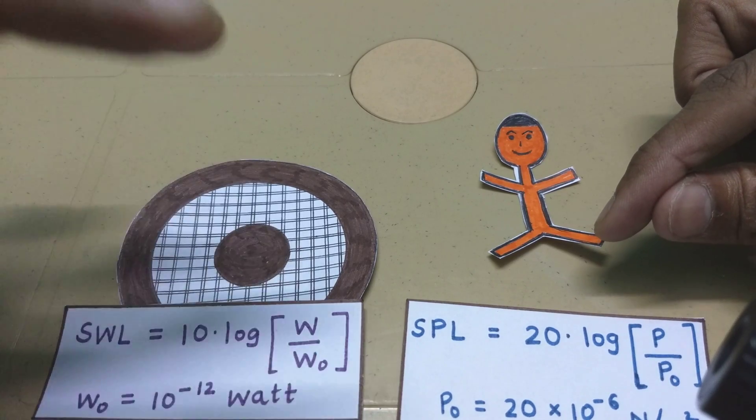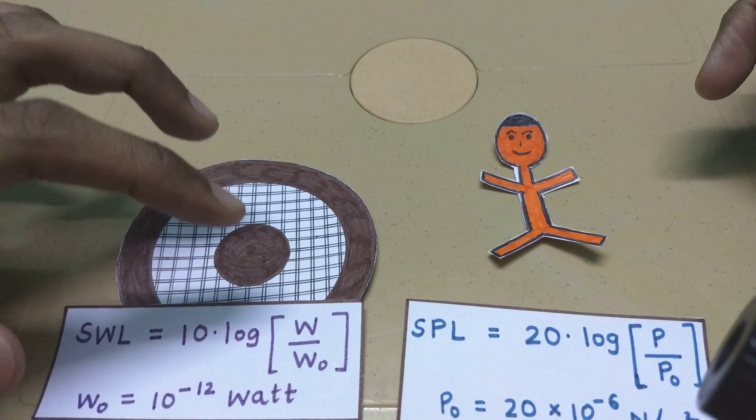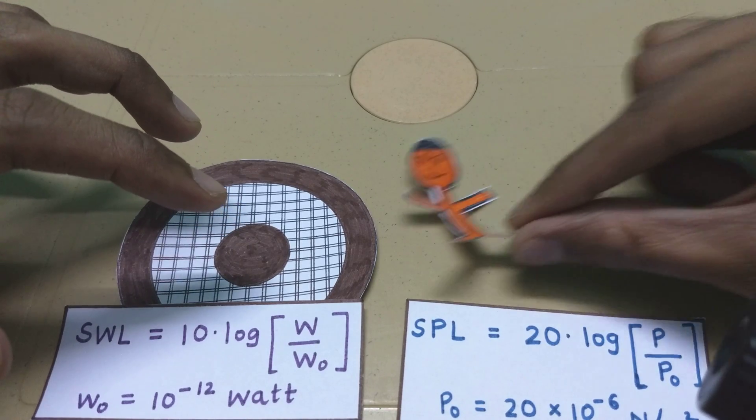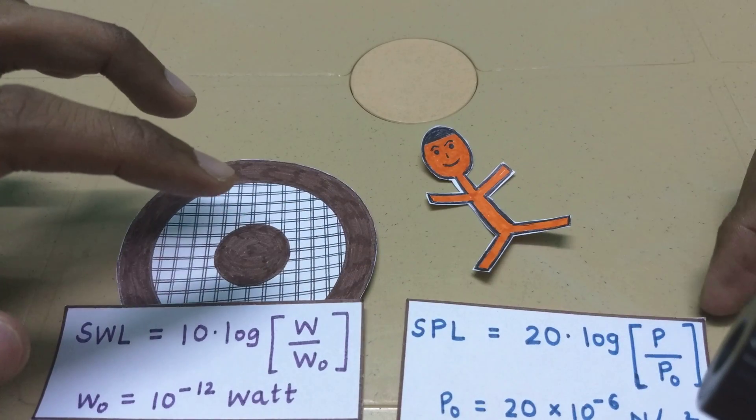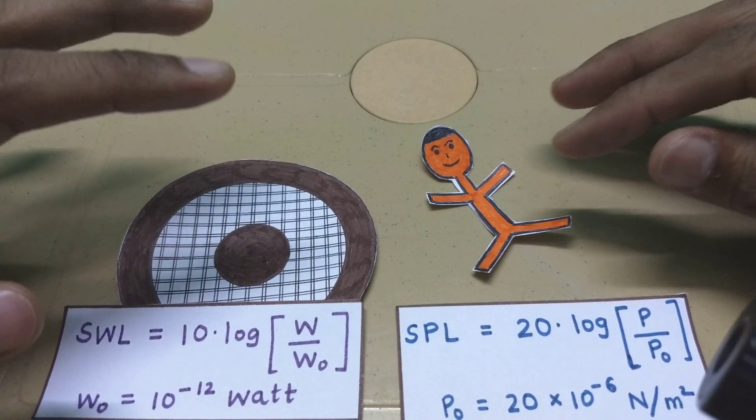The sound power level is still the same because the speaker is the same and the source of power is the same. So when Bob moves farther away or moves closer, it is the sound pressure level or the pressure fluctuations that is creating this effect.